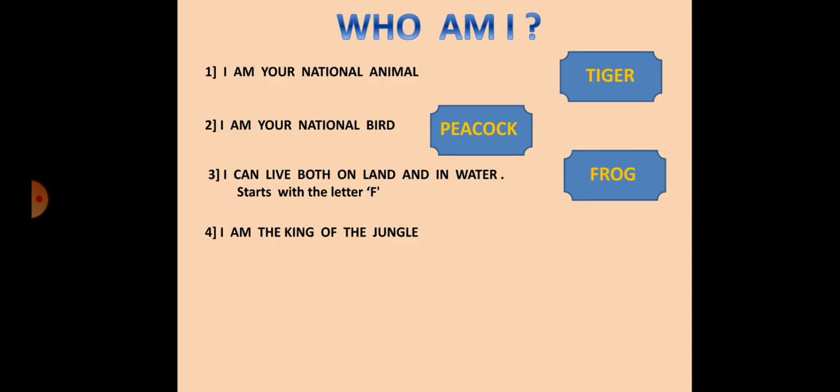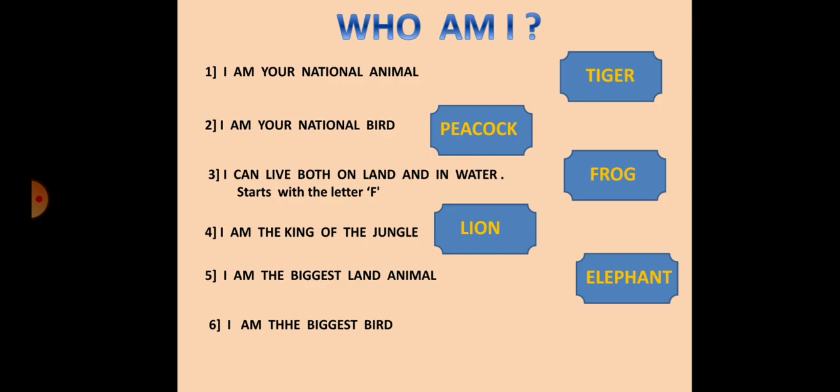The next one: I am the king of the jungle. The answer is lion. We all know that. The next one: I am the biggest land animal. The animal is elephant. And the last one: I am the biggest bird. The answer is ostrich. Exactly. Hope this video was helpful.